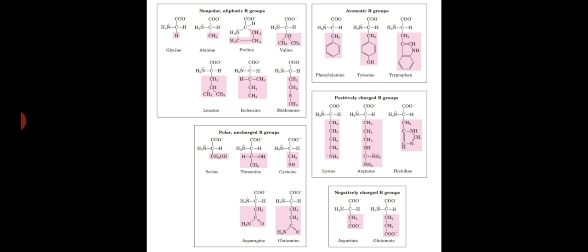Amino acids are classified based on the properties of their R groups, which are: amino acids having nonpolar aliphatic R groups, aromatic R groups, polar uncharged R groups, positively charged or basic R groups, and negatively charged or acidic R groups.